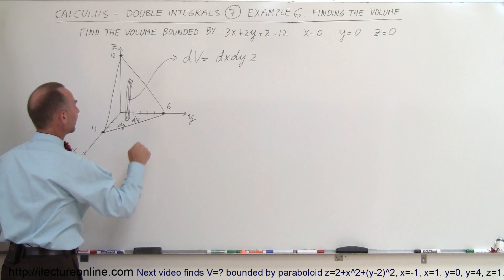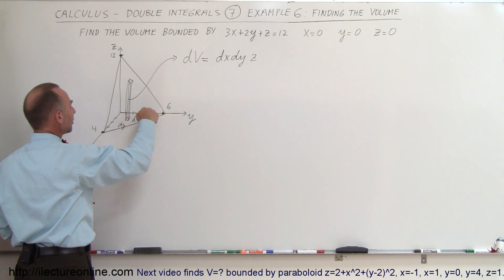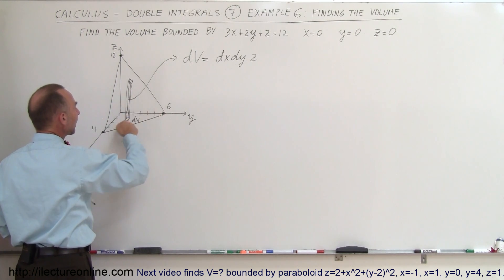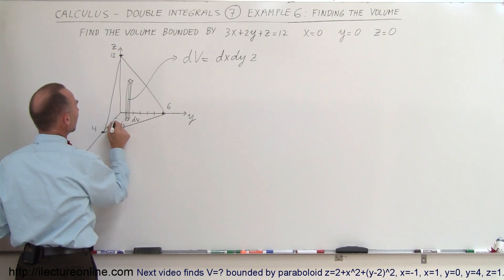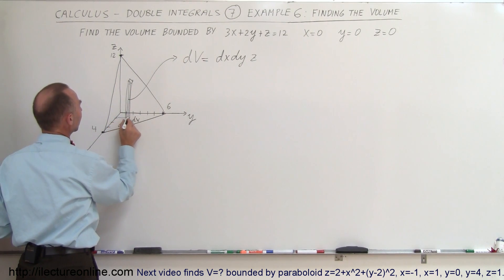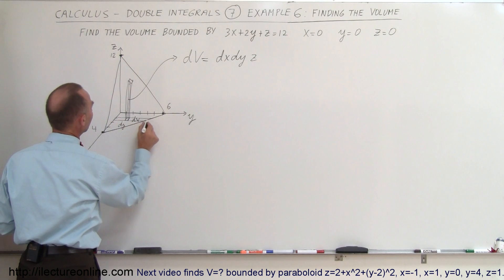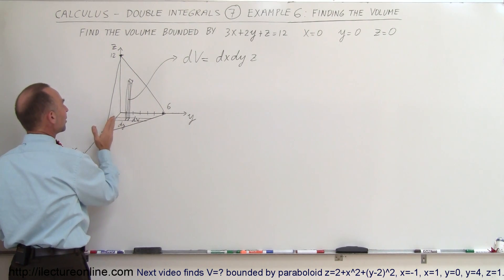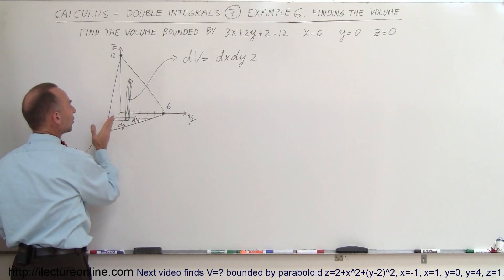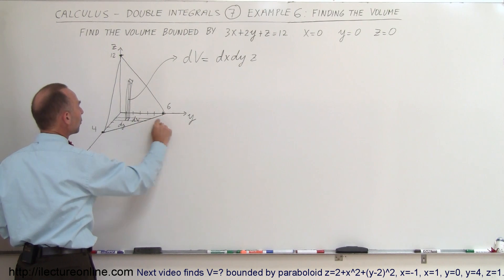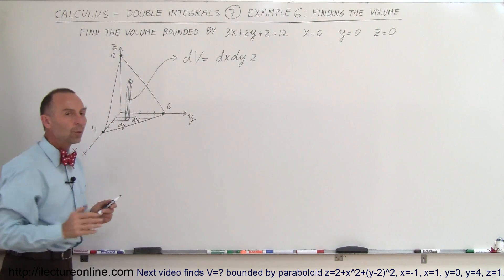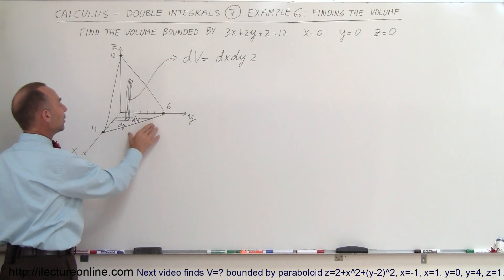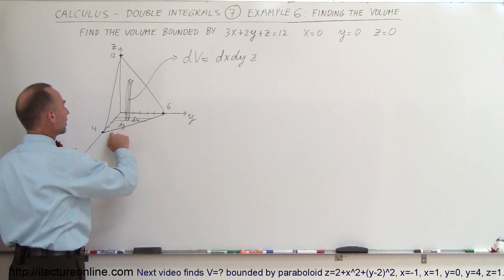What we're going to do is integrate in the y direction, and then integrate in the x direction. If we integrate in the y direction, we're going to integrate from left to right. The left limit is going to be y equals 0, but the right limit is going to depend on where we are — in the front it goes out to here, in the back it goes out to there. So we need to define the limit in terms of the equation.